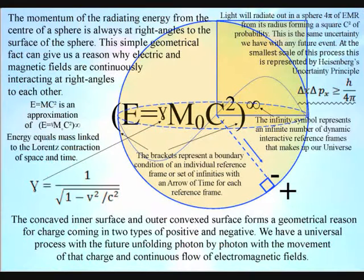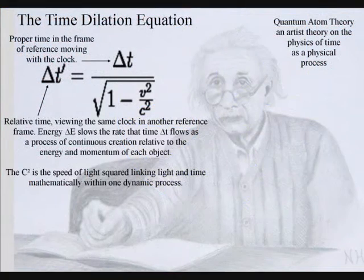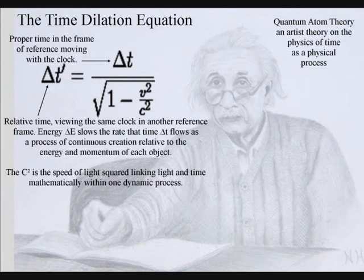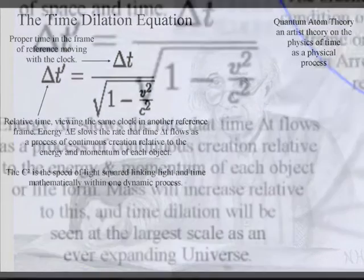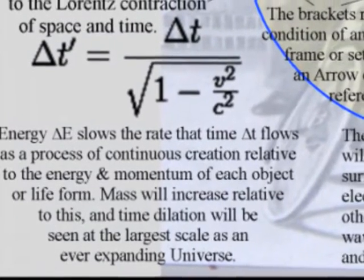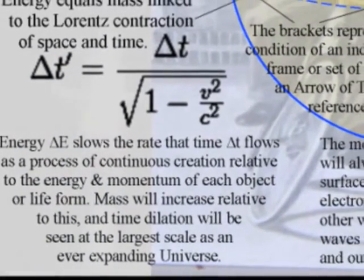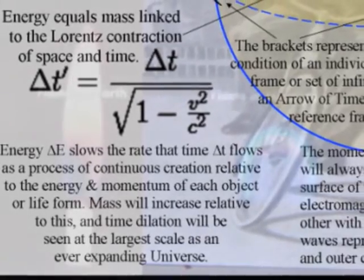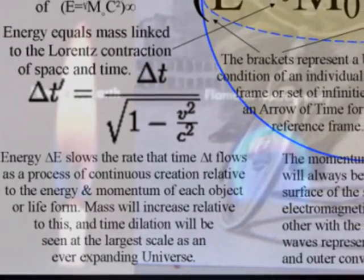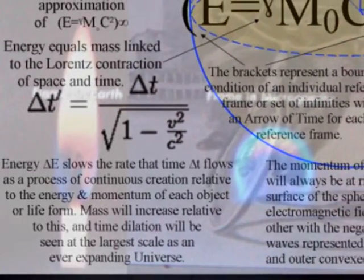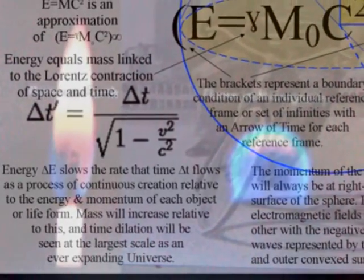This geometry can be represented mathematically by just one equation with energy equals mass linked to the Lorentz contraction of space and time. The Lorentz contraction represents the time dilation of Einstein's theory of relativity with energy slowing up the rate that time flows as a universal process of energy exchange or continuous creation.